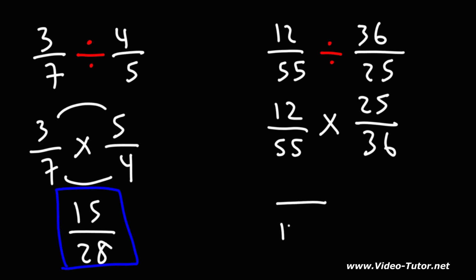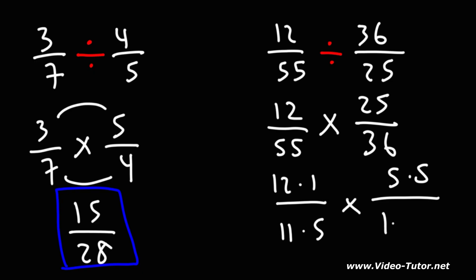55 we can write as 11 times 5, and 25 is 5 times 5. 12 I'm going to write as 12 times 1, and 36 as 12 times 3. We can cancel a 5, and we can cancel a 12.